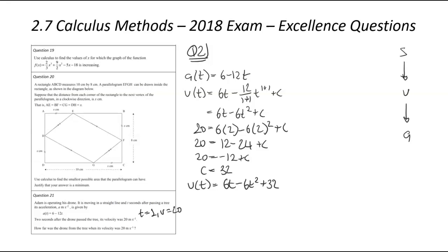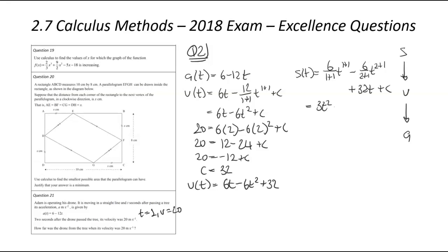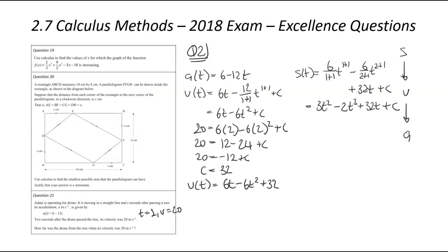So our velocity equation — velocity in terms of time — is 6t minus 6t squared plus 32. We've now got velocity, and as I said before, we need to integrate yet again to find the displacement equation. So the displacement in terms of time is going to be 6 divided by 2 times t squared minus 6 divided by 3 times t cubed plus 32t plus c. Simplifying: that's 3t squared minus 2t cubed plus 32t plus c.